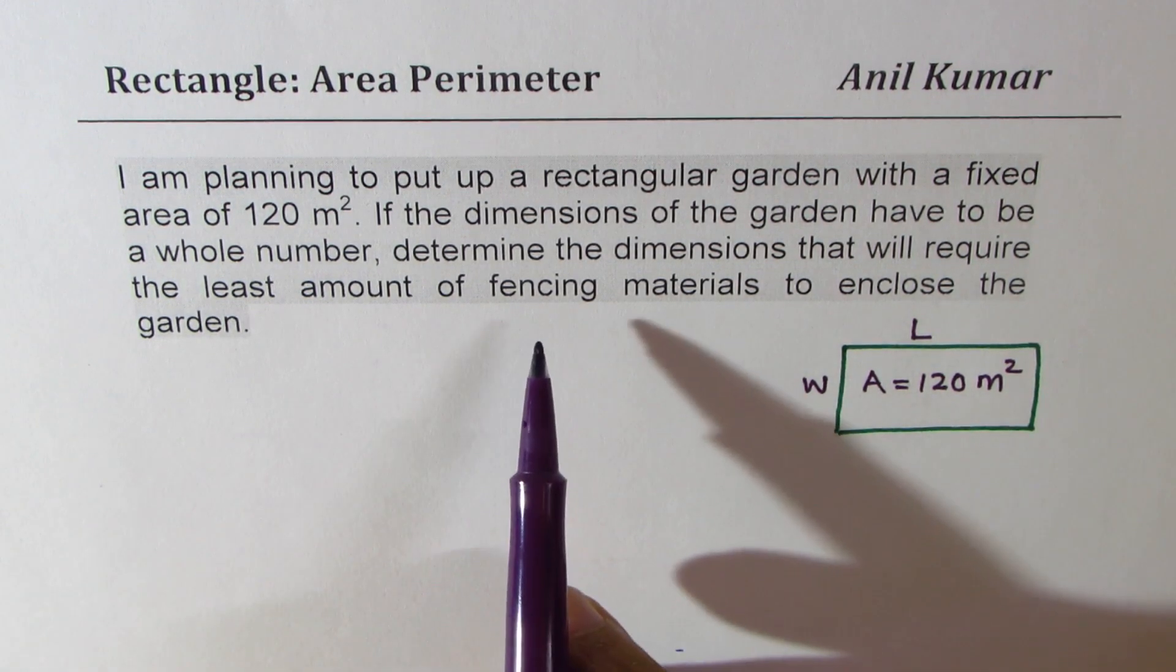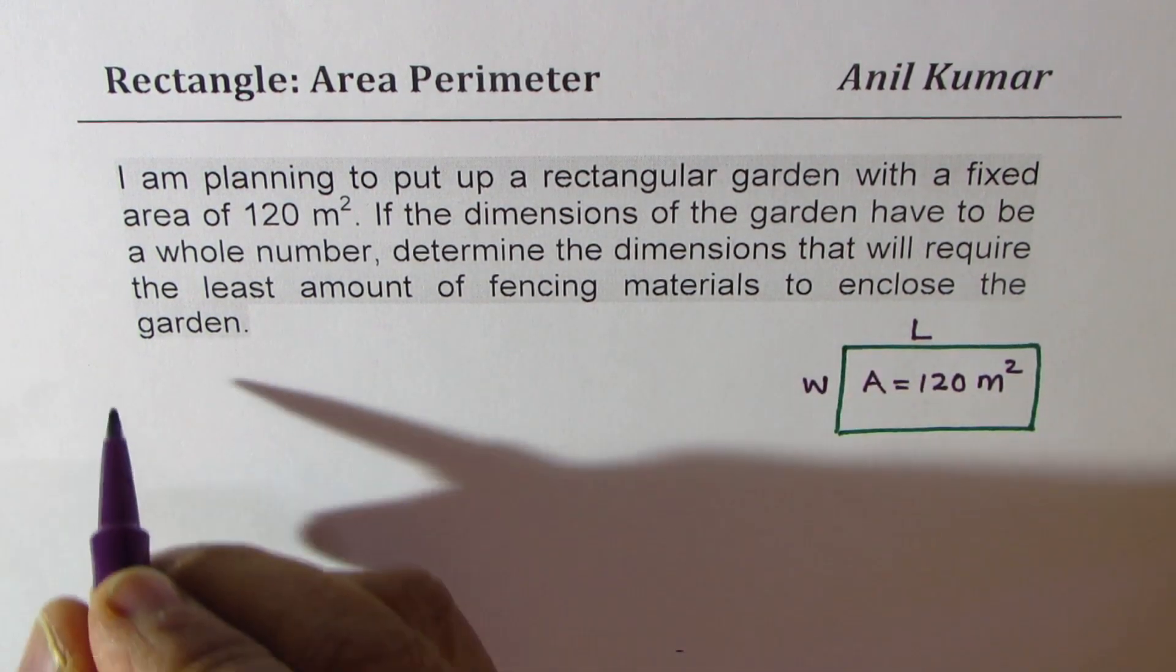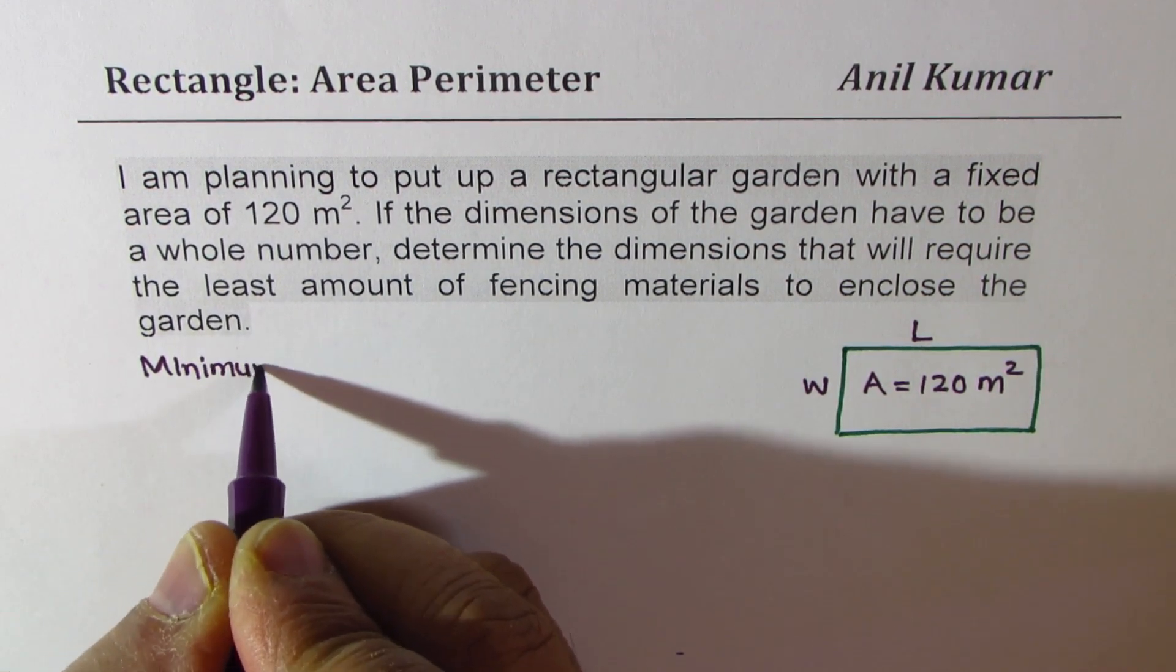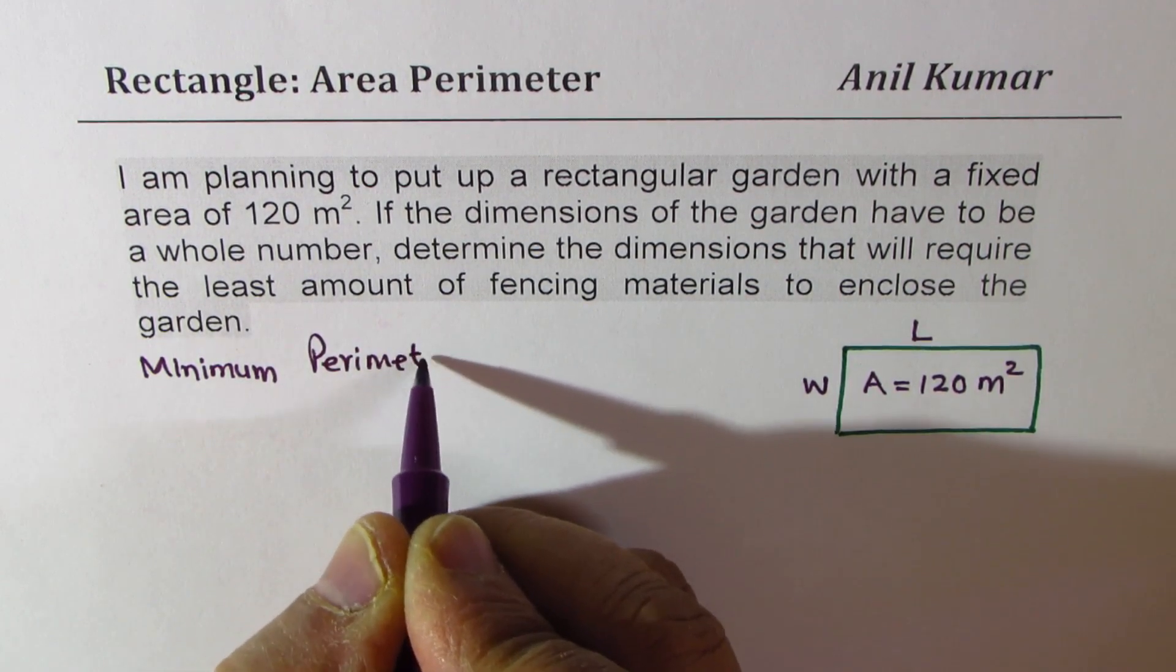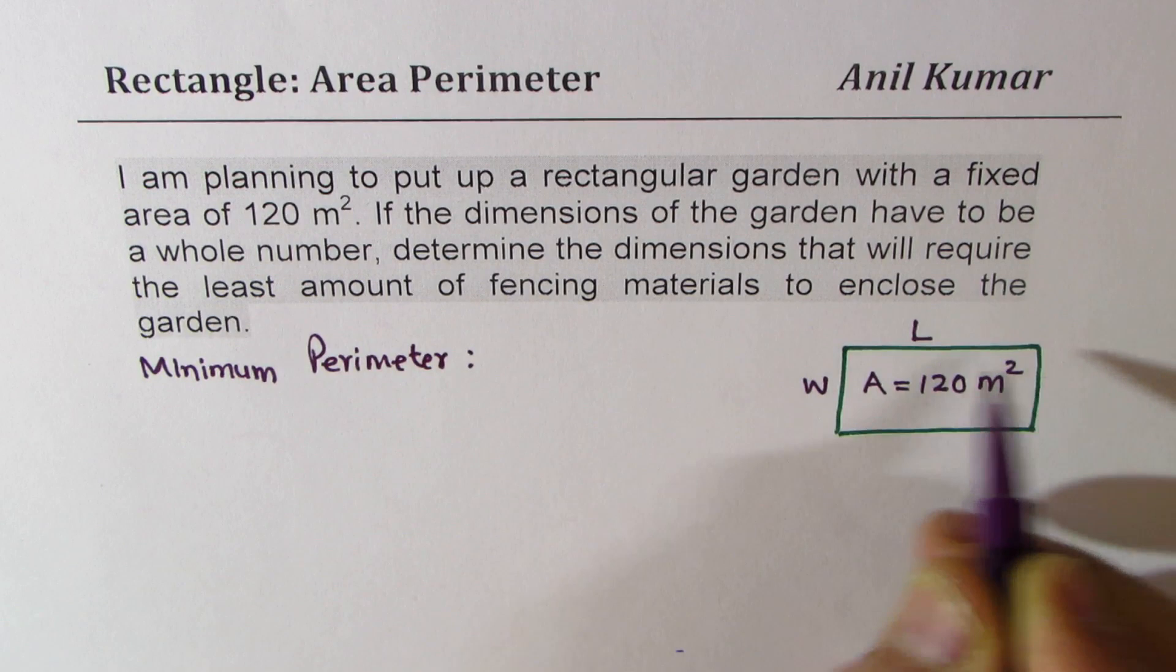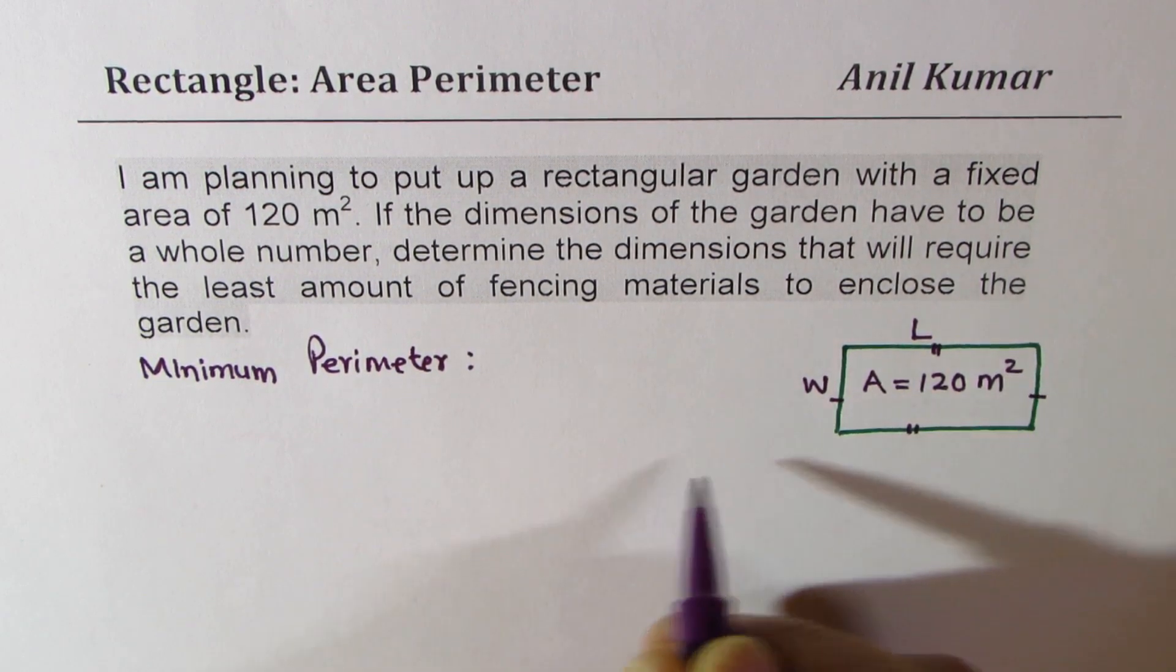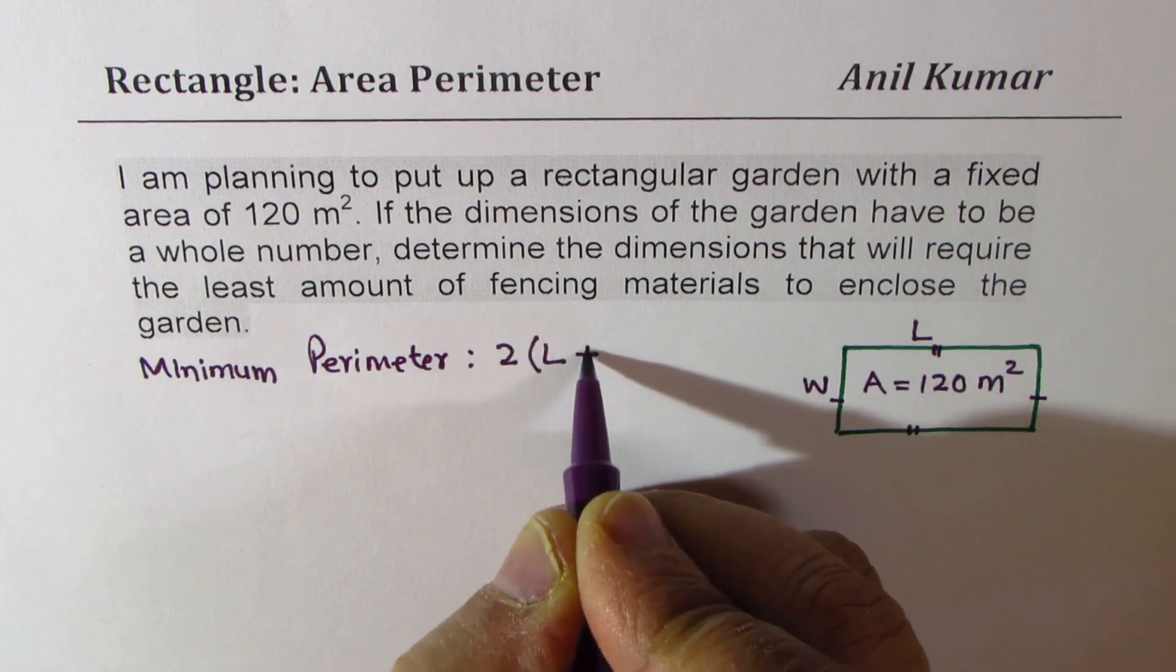Now, we want to find least perimeter. When we say fencing material, that means the idea is to get minimum perimeter. Now, as far as the perimeter goes, in a rectangular garden, opposite sides are equal. So the perimeter is twice length plus width.